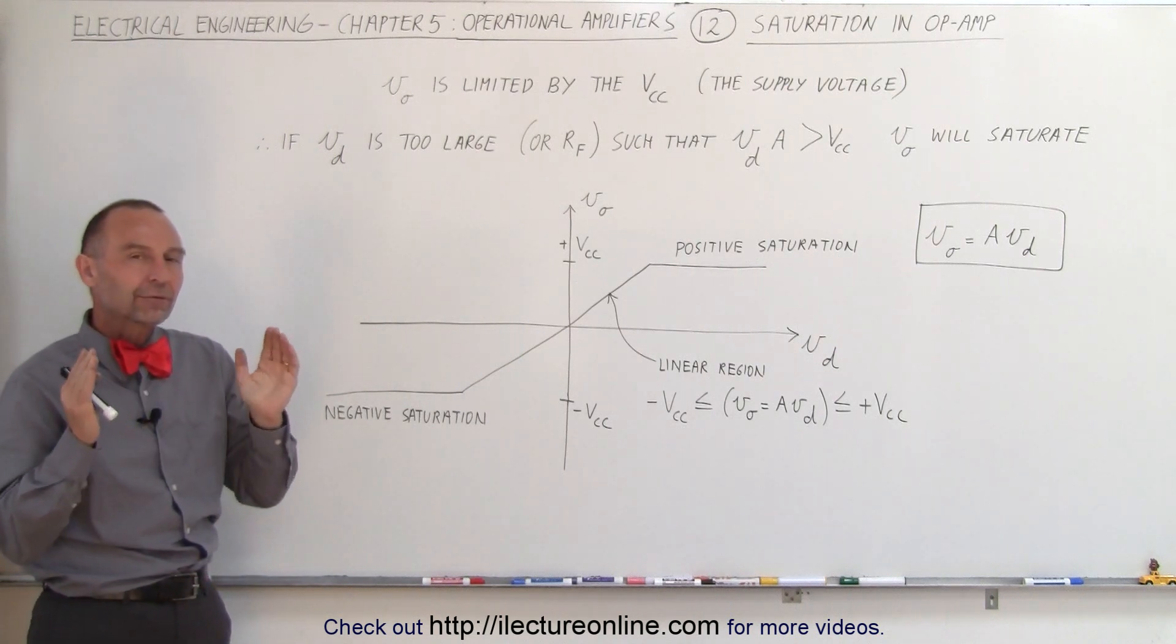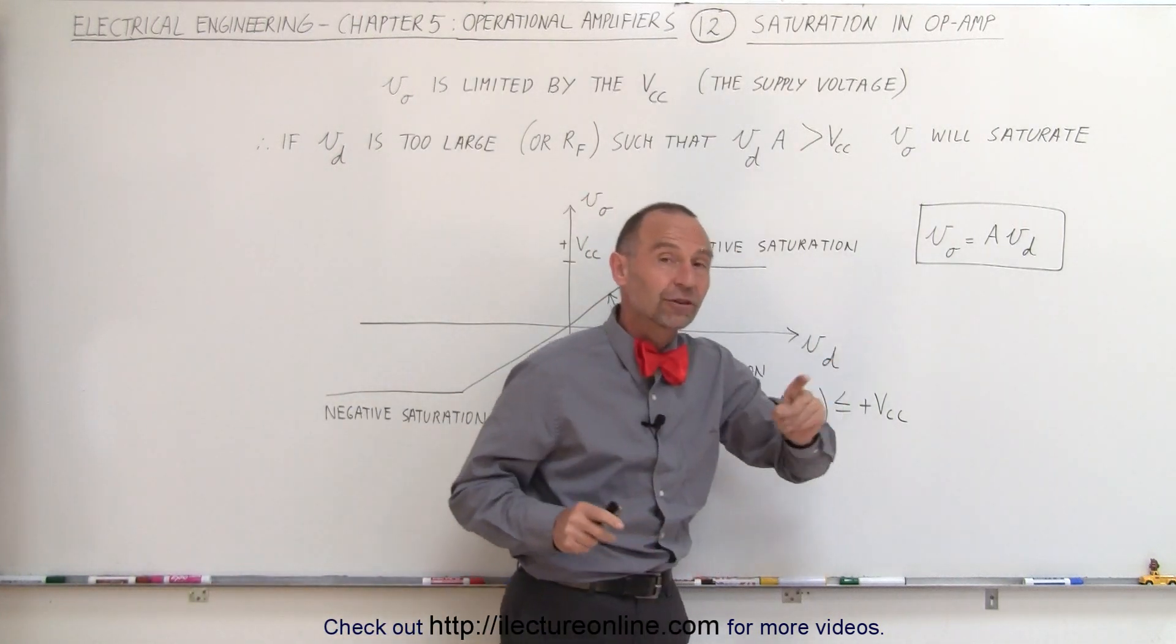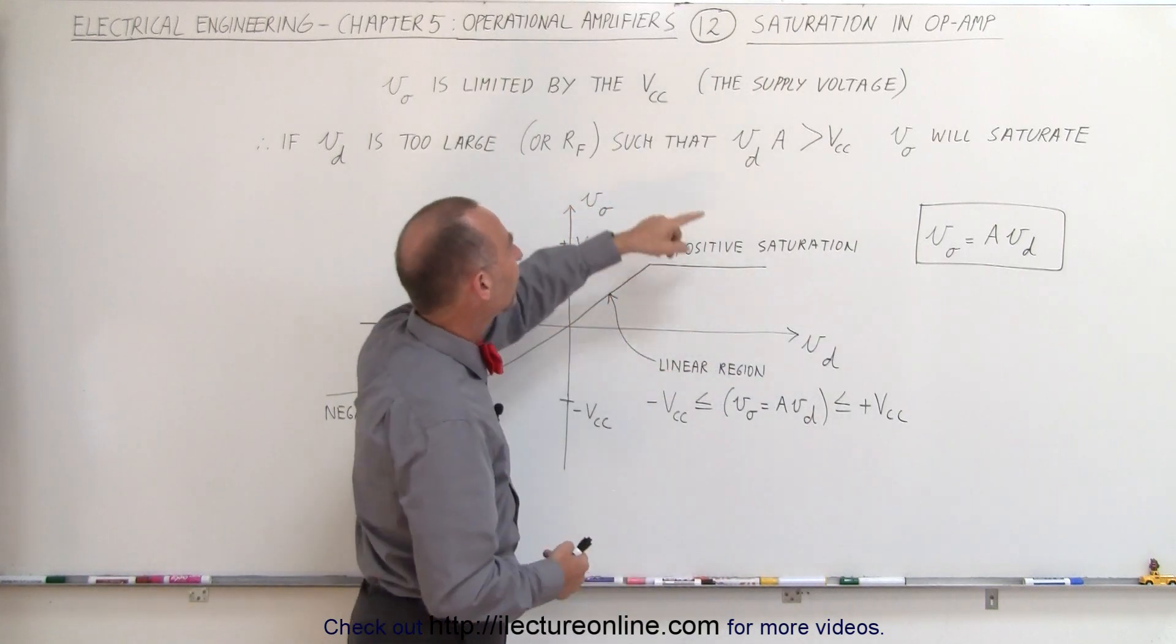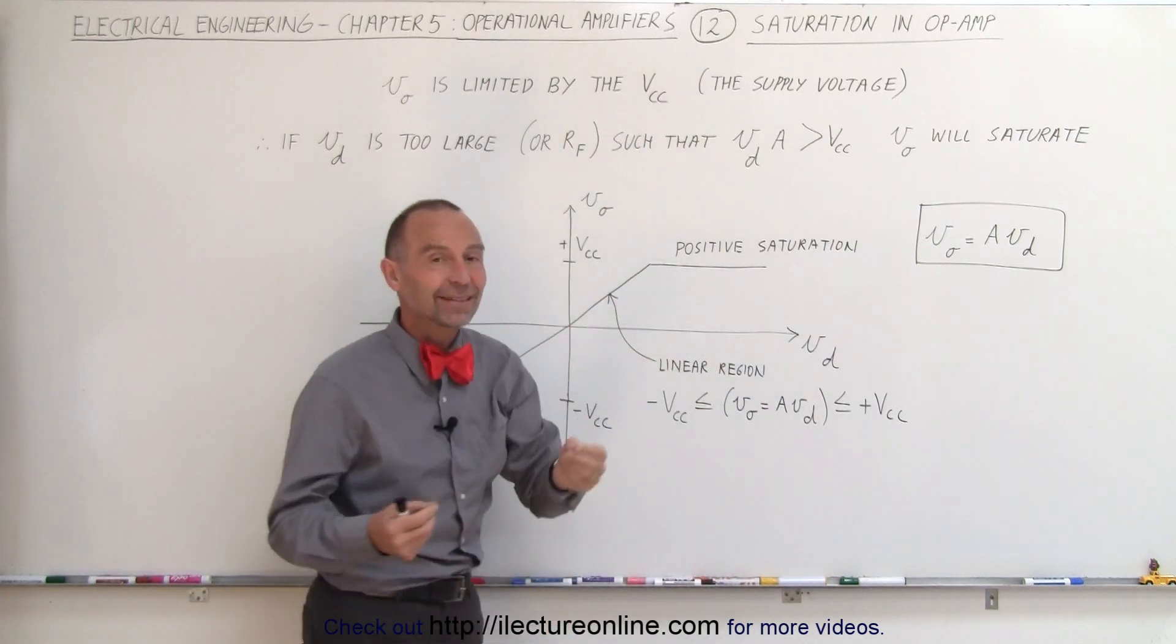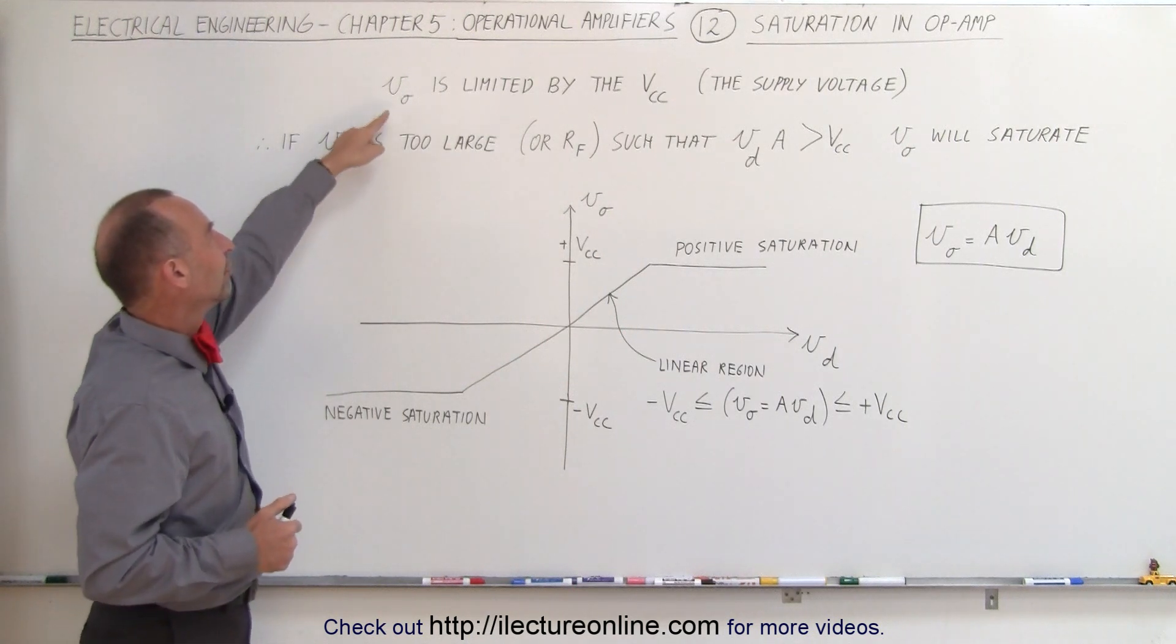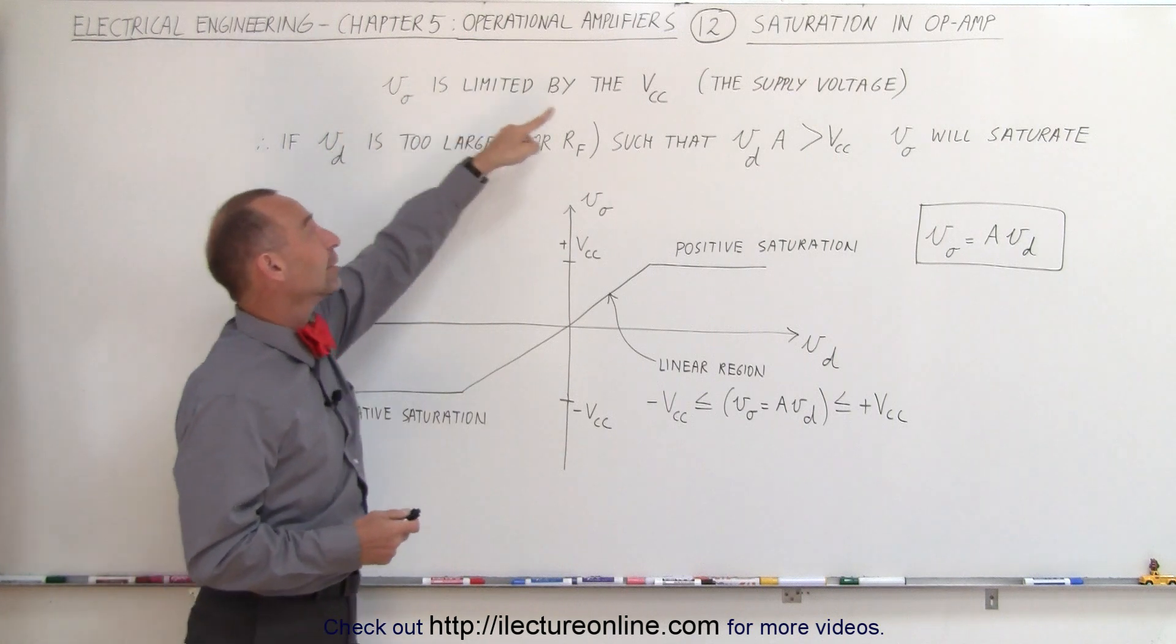what happens when that voltage difference becomes too large and the product of the open loop gain times that voltage difference is so large that the output voltage exceeds the Vcc? Now the Vcc is the voltage of the power supply, and the V output of the operational amplifier is limited by that voltage.